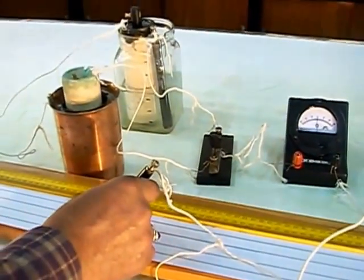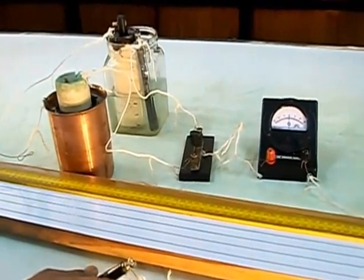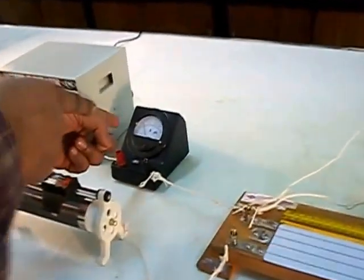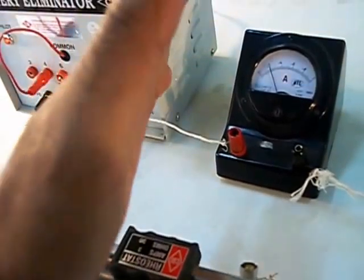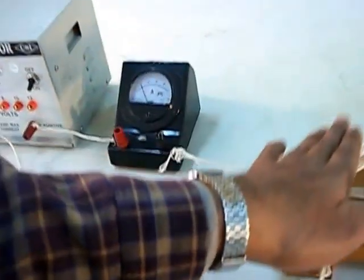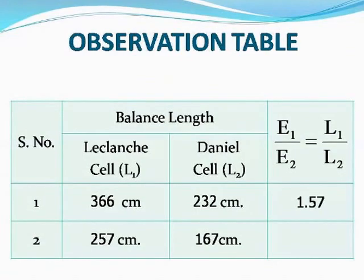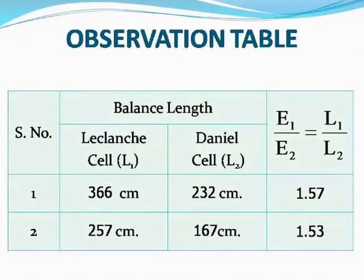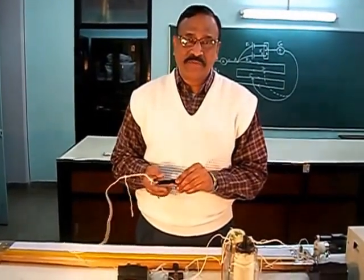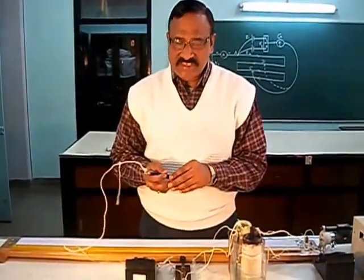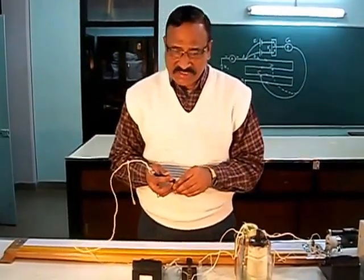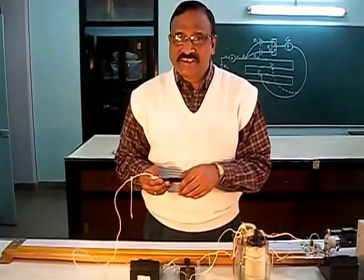So we have L1 and L2; we divide these two to get the EMF ratio of the two cells. This is our second set of observation. The current was steady throughout at 0.2 ampere. It is very important in this experiment that the potential gradient may be different for two sets, but for both sets the potential gradient must remain constant within each set. The first set gives us a ratio of around 1.57, the second set gives around 1.53, and the mean of these two comes out to around 1.55 as the ratio of EMF of the two cells.